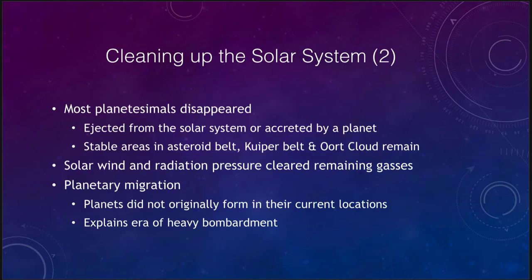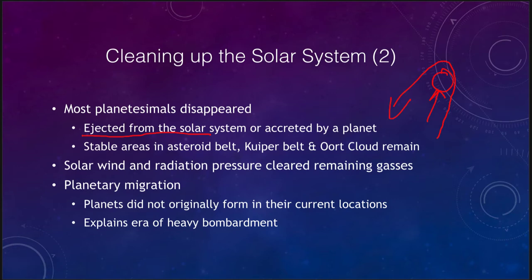Over time, the planetesimals disappear — they are either ejected from the solar system by gravitational interactions with a planet, or accreted by a planet. A planetesimal may come and collide into a planet and become part of it, or it might pass very close without colliding and get kicked out of the solar system altogether, picking up a little bit of energy from the planet. So they are either ejected or accreted, and that cleaned up the solar system. The couple of stable areas — the asteroid belt, the Kuiper belt, and the Oort cloud — still remain, but the planets cleared out all of the larger objects that used to orbit around them.